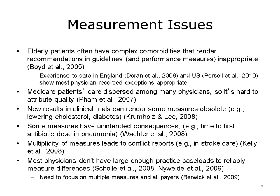Another issue is that the care of patients in Medicare tends to be dispersed among many physicians. A patient may have a primary care physician and then see a specialist affiliated with a different hospital, so it's difficult to attribute quality to a physician or hospital when the patient's care is shared by several practitioners. New results in clinical trials can render some measures obsolete. Given the recent changes in recommendations for lowering cholesterol and the treatment of diabetes, if the results from a clinical trial don't support the recommendations of current quality measures, then these measures can become obsolete.